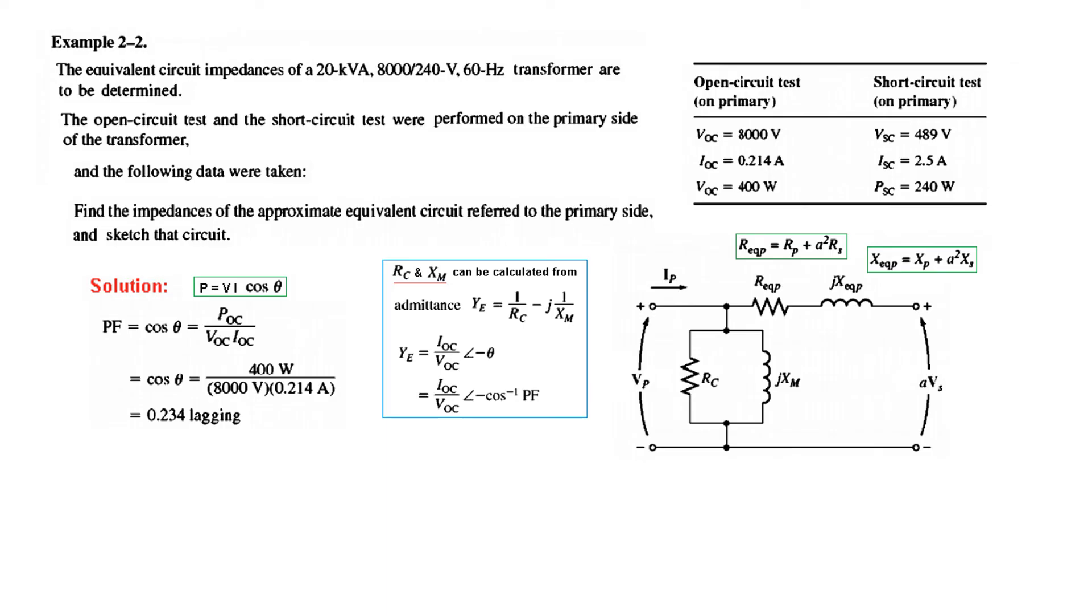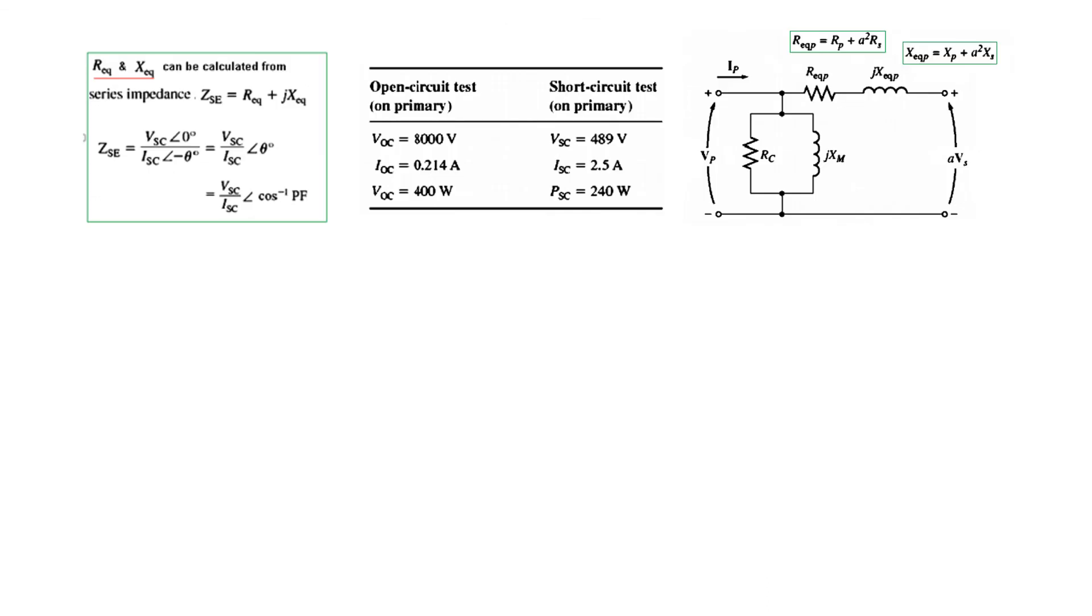So this is the power factor lagging. We have found the power factor. And now we can, using this formula, we'll find YE. So YE is IO over VOC. Plugging in the values of power factor lagging here. So we get this angle. Solving this or making, writing it in rectangular form. So this is the real part which is equal to 1 over Rc. And this is imaginary part which is equal to 1 over Xm. And from here, Rc can be found to be 1 over this value that we got here, which is equal to 159 kilo. And similarly, Xm is 1 over the value that we got from here. So it is 38.4 kilo ohms.